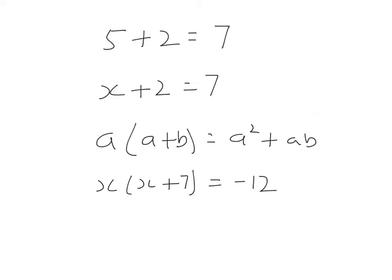Let's think about these four mathematical expressions. Some of them are equations to be solved, and some of them are statements that are always true. 5 plus 2 is always 7, so 5 plus 2 is equivalent to 7. Is x plus 2 always equal to 7? No — it's true when x equals 5, but only for that value. So this is an equation, so there's an equals sign there. Is a times a plus b always equal to a squared plus ab? a times a is a squared, a times b is ab. Yes, so that is always true — whatever a is, whatever b is, that's always true. This expression is equivalent to that expression, so there's an equivalence there.